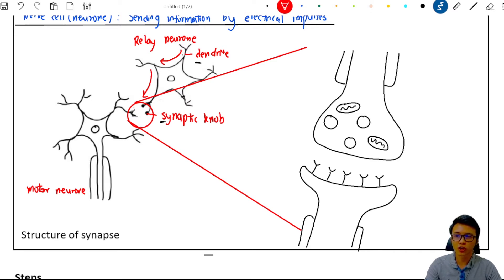Okay, let me show you what I'm trying to draw here. So from this diagram, you can see there are two parts. The first part is the synaptic knob of the relay neuron. The second part here is actually the dendrite of the motor neuron.